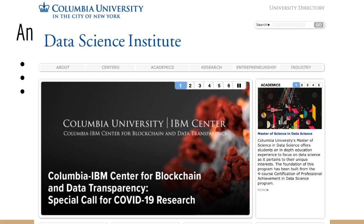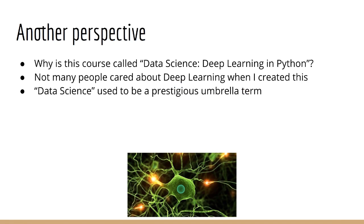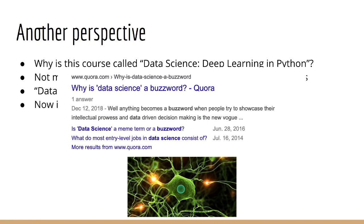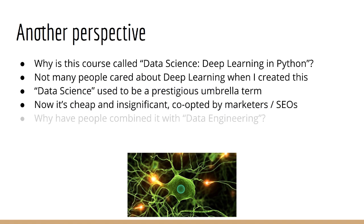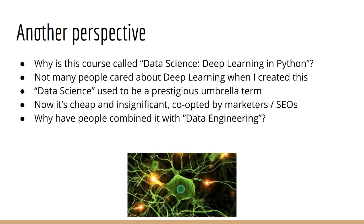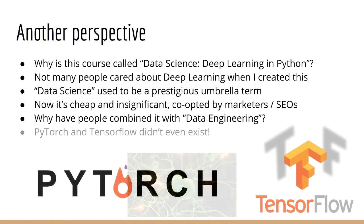I put data science in the title because back in those days, data science was still kind of a prestigious umbrella term that encompassed a lot of machine learning and statistics alike. Nowadays, the term data science seems to me to be a very cheap and insignificant term, as it's been co-opted by marketers and SEO experts. People have combined data engineering with data science, which should be separate in my opinion. But that's beside the point. What I'm getting at is, this course was created so long ago that many of the libraries you know and love today, like PyTorch and TensorFlow, simply did not even exist.